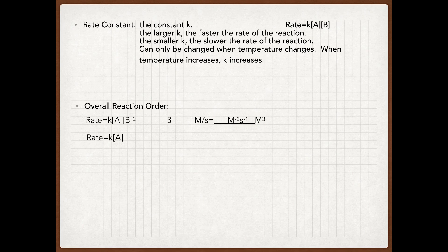For rate equals K times concentration of A — first order overall — if my units for rate are molar per hour, the right-hand side units are simply molar, so I multiply by hours to the negative one to get molar per hour. So my units for K are hours to the negative one. For a sixth-order reaction with A first order, B second order, and C third order, with rate in molar per minute, the right-hand side gives molar to the sixth, so K's units are molar to the negative fifth, minutes to the negative one.